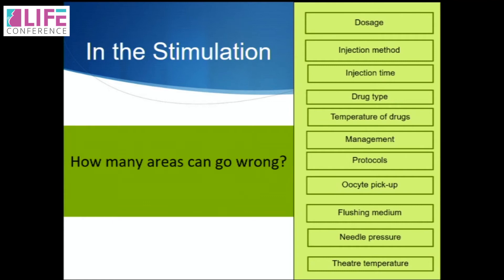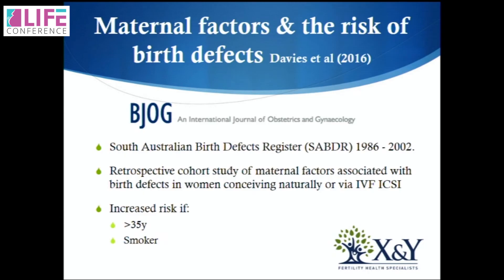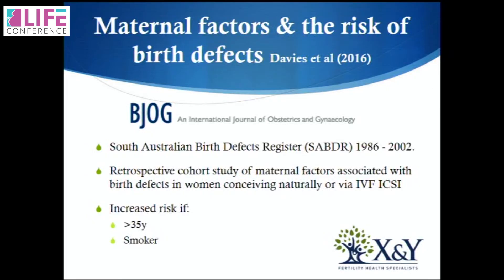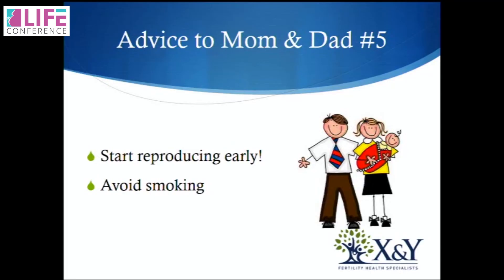Doctors, look at the stimulation. What can go wrong? Many things — this can all have an effect on the eggs produced and therefore on the offspring. Do consider all aspects when prescribing protocols for ovarian stimulation. A paper from South Australia last month did a retrospective study of the birth register looking at real factors affecting birth defects. The two main ones were increased maternal age and smoking. So, as usual: start reproducing early and avoid smoking.